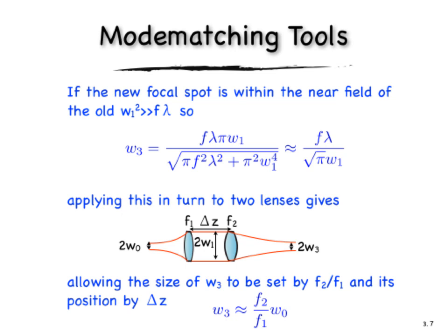We can use an assumption that the new focal spot is within the near field of the old focal spot, and what that means is the expression in the denominator here, the square root, the first term is insignificant, so we can let it equal 0. That's a good approximation. And that simplifies this expression to an inverse relationship.